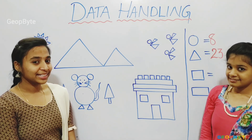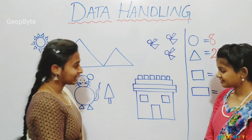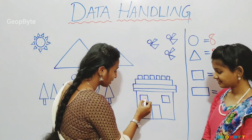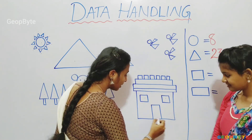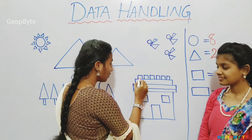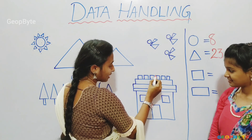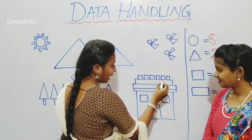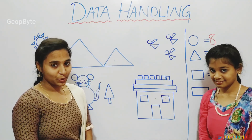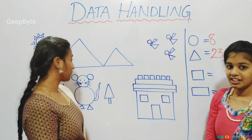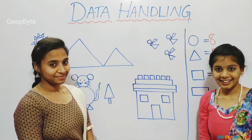Now, let us count how many squares are there. One, two, three, four, five, six, seven, eight, nine. Children, did we miss any square? No, we did not miss any square. So let us write nine.